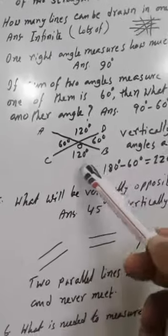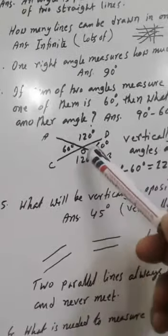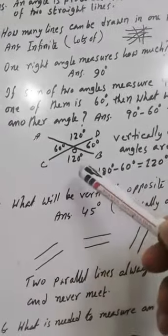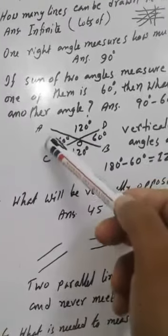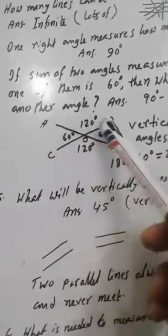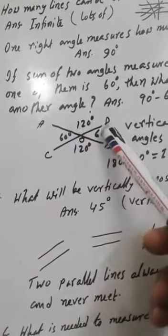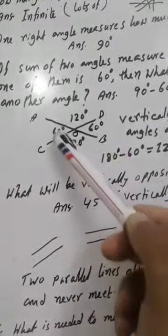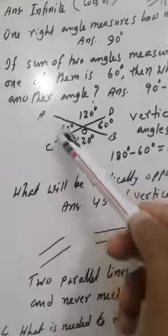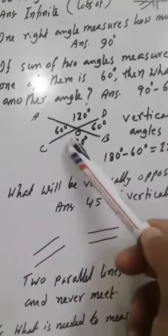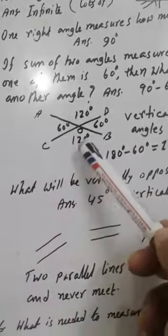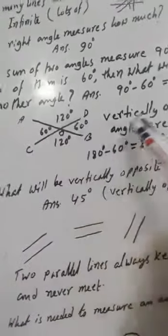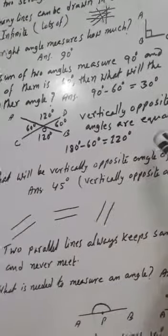Two straight lines B and C, D intersect at O, and four angles are formed. This angle and this angle are vertically opposite angles. 60 and 60; 60 plus 120 — both together are 180. So 180 minus 60 gives 120. The other angles are each 120 degrees. Vertically opposite angles are equal.